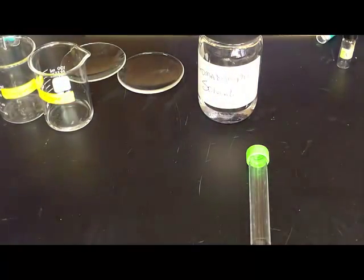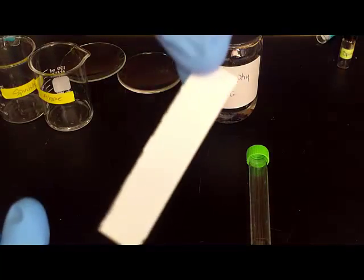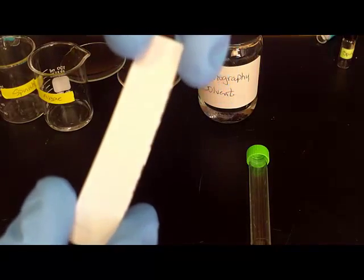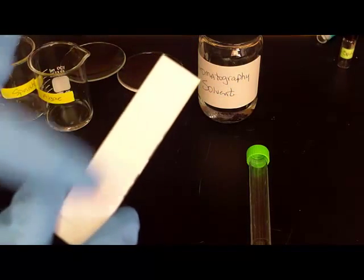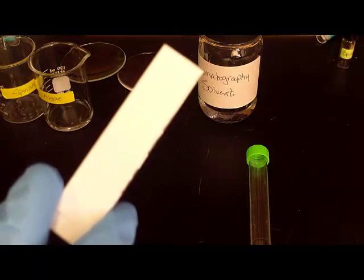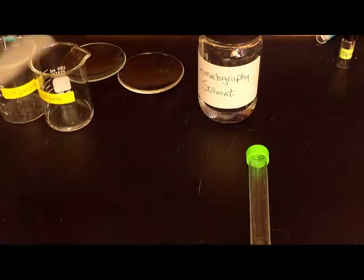Now I'm not sure if you could tell but the plates are shiny on one side and the other side is dull, and this is the side that we apply to, the dull side. So you'll do your pencil drawing on this side and you'll apply the extract to this side. If you try to put on the shiny side it will just roll right off.